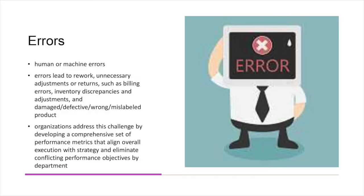The sixth waste is errors. Errors can be of two types: human or machine errors, but they always lead to waste. Such errors lead to rework, unnecessary adjustments, or returns such as billing errors, inventory disparities, and damaged, defective, or wrong products. Organizations address this challenge by developing a comprehensive set of performance metrics that align overall execution with strategy and eliminate conflicting performance objectives across departments.